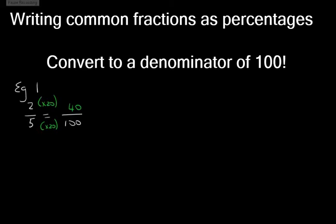What must I do to 5 to get 100? I need to multiply it by 20. And what I do to the denominator, I also need to do to the numerator. 2 times 20 is 40. This tells me that 2 over 5 is 40%.